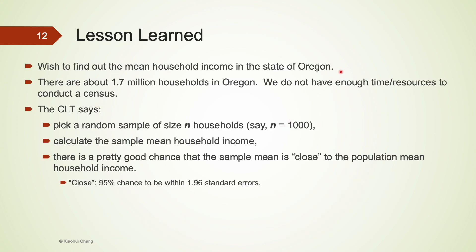Let's use one example to consolidate all these concepts. We are interested in finding the average household income in the state of Oregon. There are about 1.7 million households in Oregon, and we do not have enough time and resources to conduct a census. The Central Limit Theorem tells us that when we pick a random sample of 1,000 households and calculate the sample average household income, there is a very good chance it is close to the true population average income. According to the empirical rule, 95% of the time the sample average is within 1.96 standard deviations of the true population average.